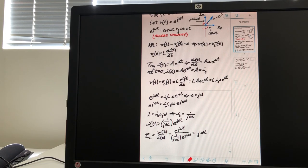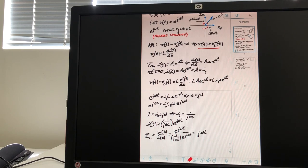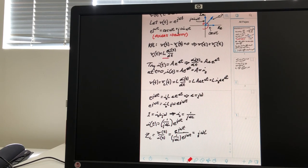So, we have here then V of T equals VL of T, but what is VL of T? Well, it's L dI dT. So, here's L dI dT.